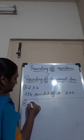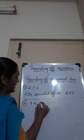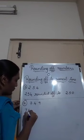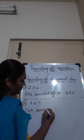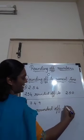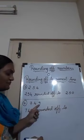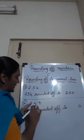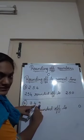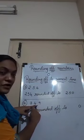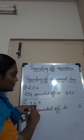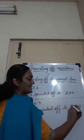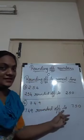Take one more example: 749. Now 749 rounded off — it depends on the ones place. We have 9 in the ones place, so we make the ones place 0 and add 1 to the tens place. So 4 plus 1 equals 5. The hundreds place remains the same — 7. So 749 rounded off to nearest 10 is 750.